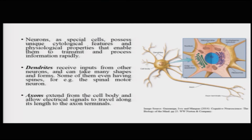Neurons are special cells that possess unique cytological and physiological properties that enable them to transmit and process information rapidly. When talking about information at this point, it refers to chemical and electrical activity, and how that really plays out we will see in detail moving further.